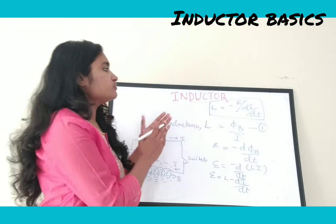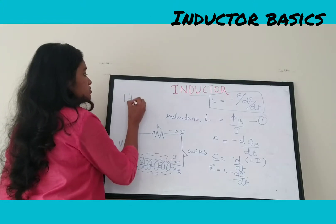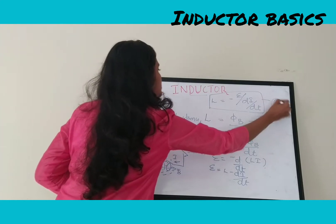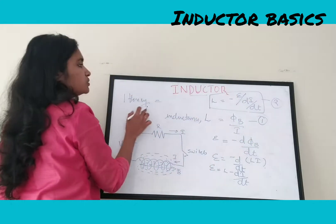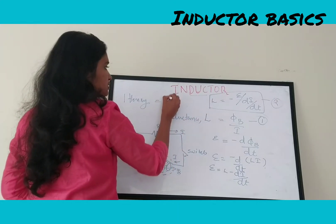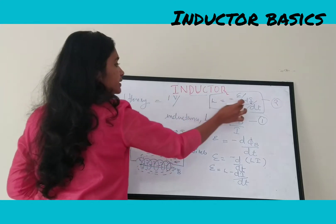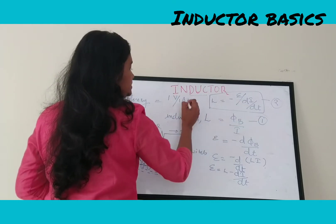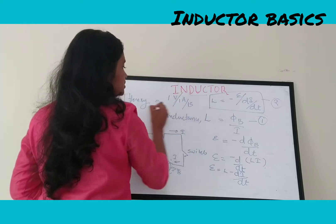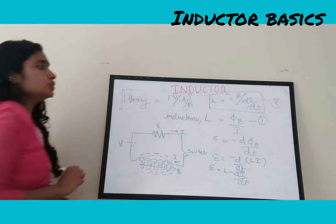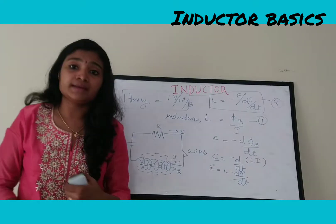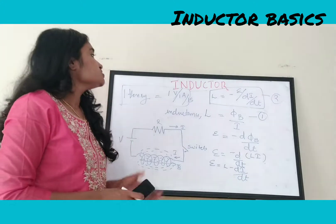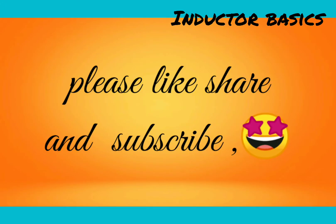The unit of inductance is the Henry. From the equation, one Henry equals one Volt divided by one Ampere per second. So: 1 H = 1 V / (1 A/s). This is the unit of inductance for an inductor.